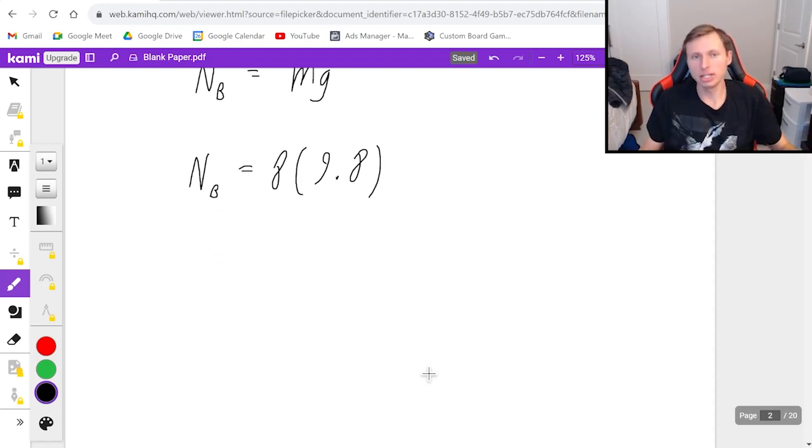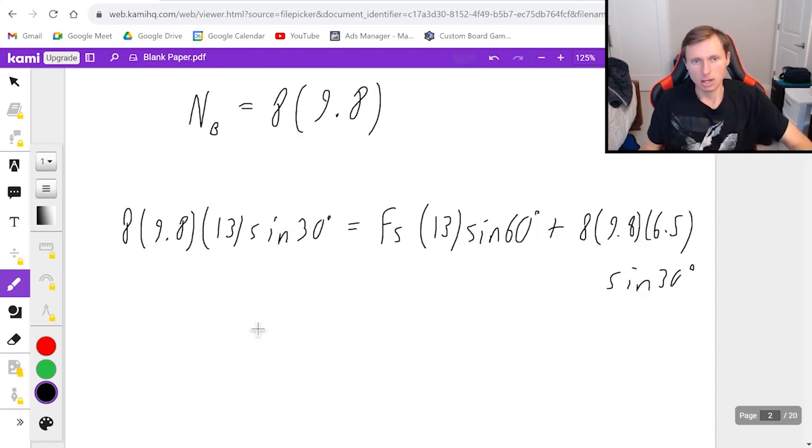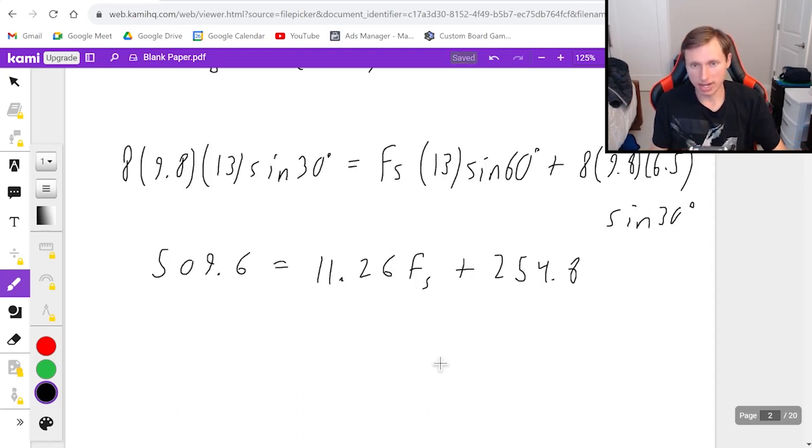Plugging into that equation, it's going to be 8 times 9.8 times 13 times the sine of 30 equals Fs times 13 times sine of 60 plus 8 times 9.8 times 6.5 times the sine of 30. If I plug in a lot of this in my calculator, I'll get 509.6 equals 11.26 Fs plus 254.8. Subtract the 254.8 from both sides, and then divide by 11.26. That's going to get me Fs equals 22.6 Newtons.